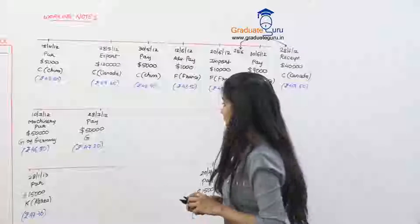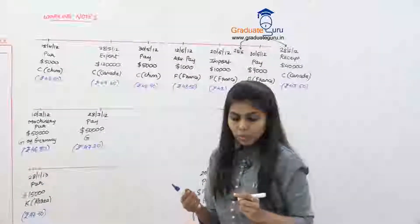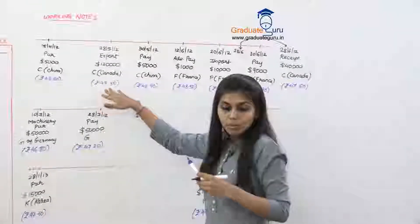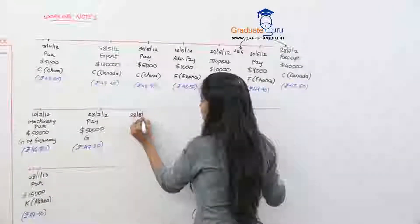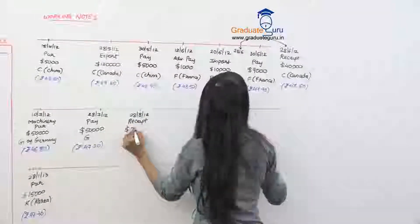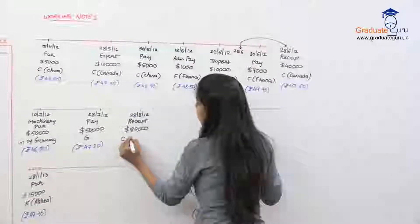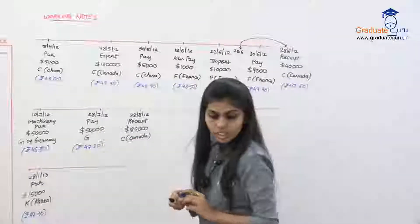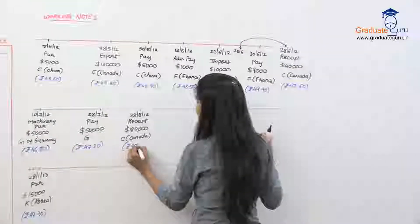On 28th August 2012, the balance receipt of 80,000 dollars comes in from C of Canada. So 40,000 plus 80,000 = 1,20,000 received out of the 1,00,000 export. The rate on 28th August is rupees 47.00.